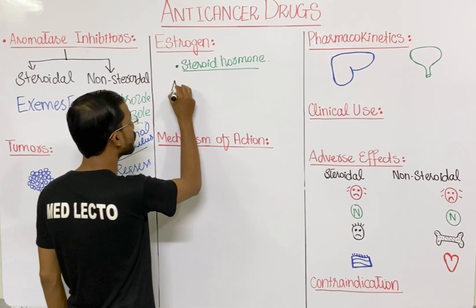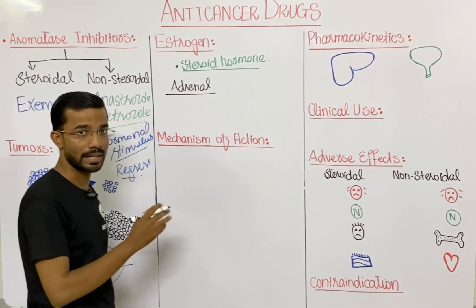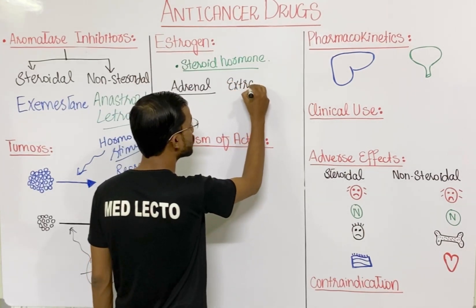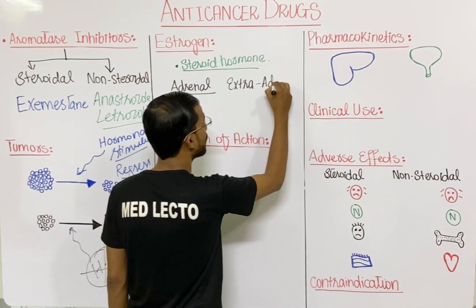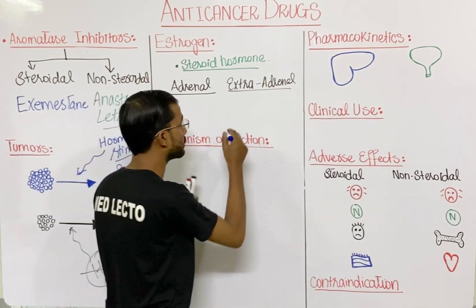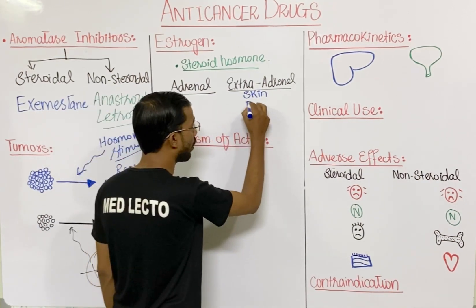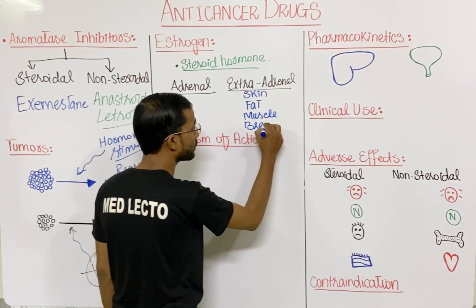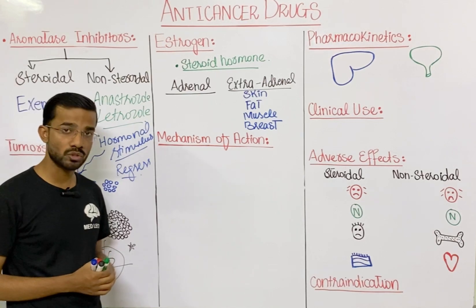If estrogen is produced from the adrenal gland, it is called the adrenal source of estrogen production. There are also situations when estrogen is produced outside the adrenal gland, which is called the extra-adrenal source. In the extra-adrenal source, estrogen can be produced from skin, fat, muscles, and other tissues.